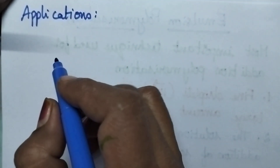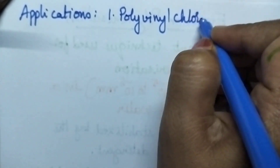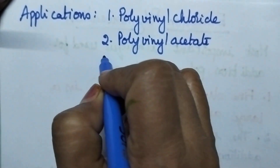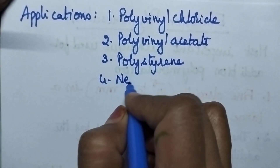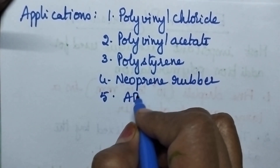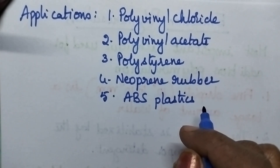Coming to the applications of emulsion polymerization: this technique is highly useful for the preparation of polyvinyl chloride, polyvinyl acetate, polystyrene, and neoprene rubber. It is also the best technique for the preparation of ABS plastics, which are highly useful for the manufacturing of keyboard keys, pipes, and fittings.